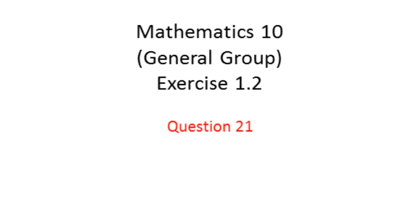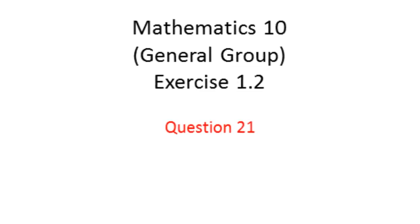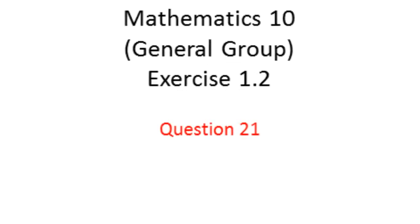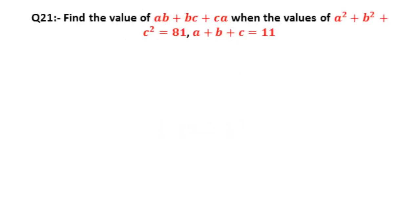Next we are going to solve question number 21 of 10th class math general group exercise 1.2. Question 21 is: find the value of ab + bc + ca when the values of a² + b² + c² = 81 and a + b + c = 11.